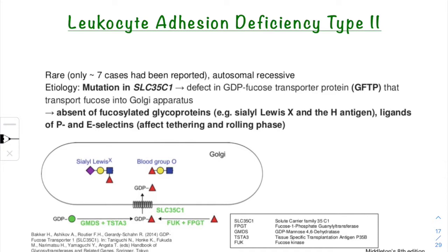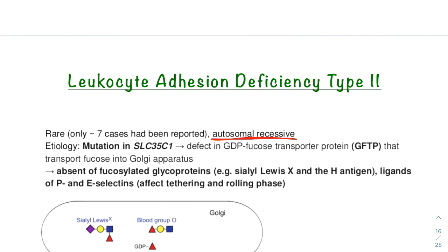In this lecture, I will be discussing the second type of leukocyte adhesion deficiency, that is LAD type 2. LAD type 2 is a rare autosomal recessive disorder; only around 7 cases have been reported so far. It is characterized by recurrent infections, persistent leukocytosis, and severe mental and growth retardation.